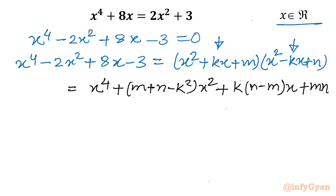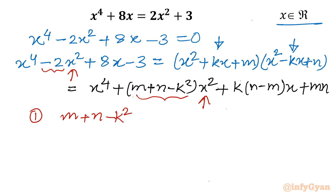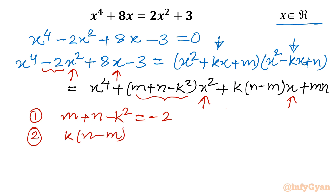Now we will compare both sides for the coefficients. Comparing x square coefficients: m plus n minus k square equal to minus 2. Comparing x coefficients: k times n minus m equal to 8. And comparing constant terms: mn equal to minus 3. So we have 3 equations and we have to solve for m and n.